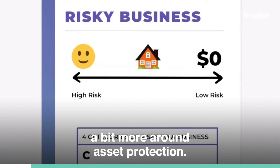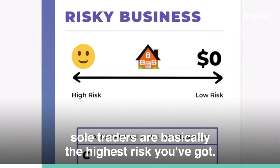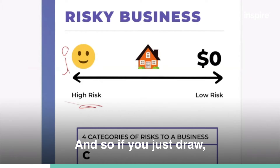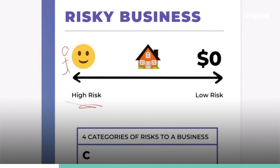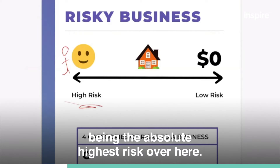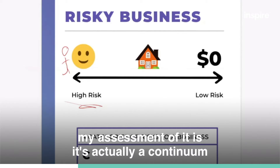Sole traders are basically the highest risk you've got. You can draw the pictures to match what you've got on your end — sole trader being the absolute highest risk over here. In terms of asset protection, my assessment of it is it's actually a continuum of